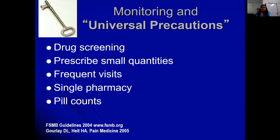When using opioid medications, apply universal precautions: screen for drug habits and recreational medication use. For patients with behavioral issues, prescribe in small quantities with frequent follow-up. Use a single pharmacy for prescriptions to avoid patients collecting medicines from multiple doctors. Ask patients to bring back their tablets at each visit so you can verify whether they are taking medications properly. These precautions help manage chronic persistent pain safely and effectively.